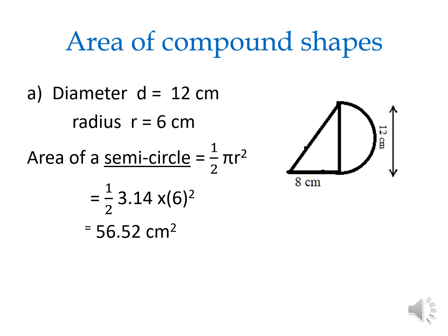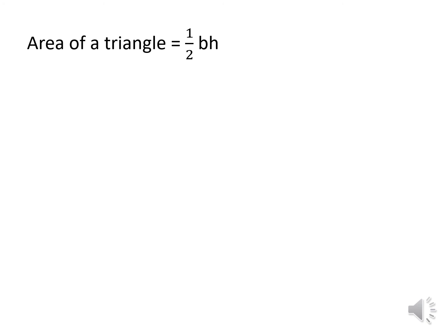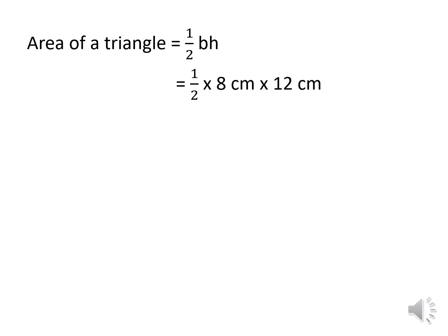What else do we have to find? The area of the triangle — we have found the area of the semicircle, and we have one more thing to find. Next, find the area of the triangle. The triangle formula is half base times height: 1 over 2 times base times height. The base is 8 centimeters and the height is 12 centimeters, so 1 over 2 times 8 times 12. The area of the triangle is 48 centimeter square.